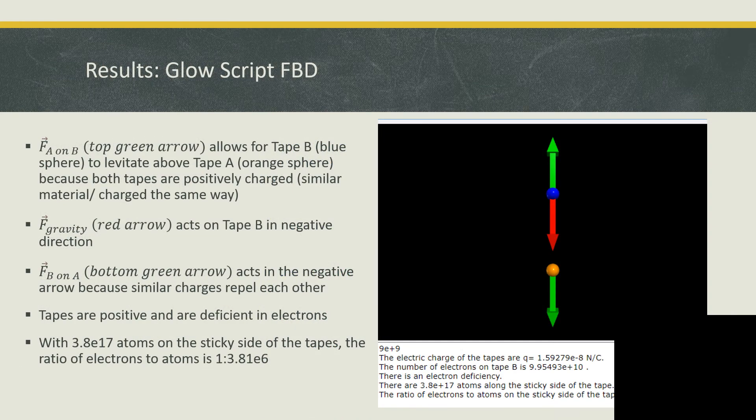When we run our code in GlowScript, we can display the tapes as spheres to represent point charges and use arrows to represent the vertical forces acting on them. The top blue sphere is tape B and the bottom orange sphere is tape A. Two green arrows represent the electric forces onto each point charge from the other point charge, and the red arrow pointing down represents the gravitational force of tape B that is the same magnitude of the electric force of tape A on tape B. We only show the gravitational force on tape B to show that it cancels out with the electric force of A on B in order to show that electric forces repel one another and allow for tape B to levitate above tape A at a certain distance of 3.5 centimeters.